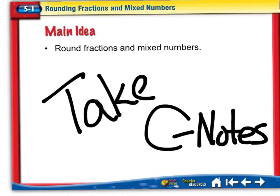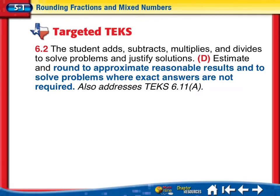Our next thing to learn about fractions is how to round mixed numbers and fractions to the nearest half number. Take C notes and be careful to look at all the examples. The TIC for this unit is 6.2d: estimate and round to appropriate reasonable results to solve problems where exact answers are not required. This is about estimating and rounding.